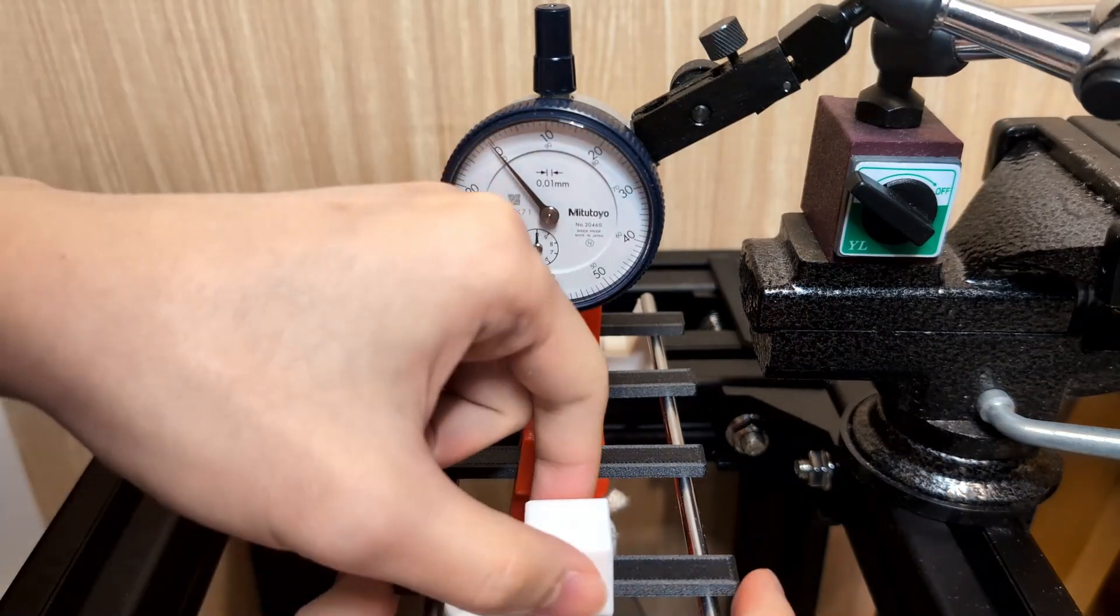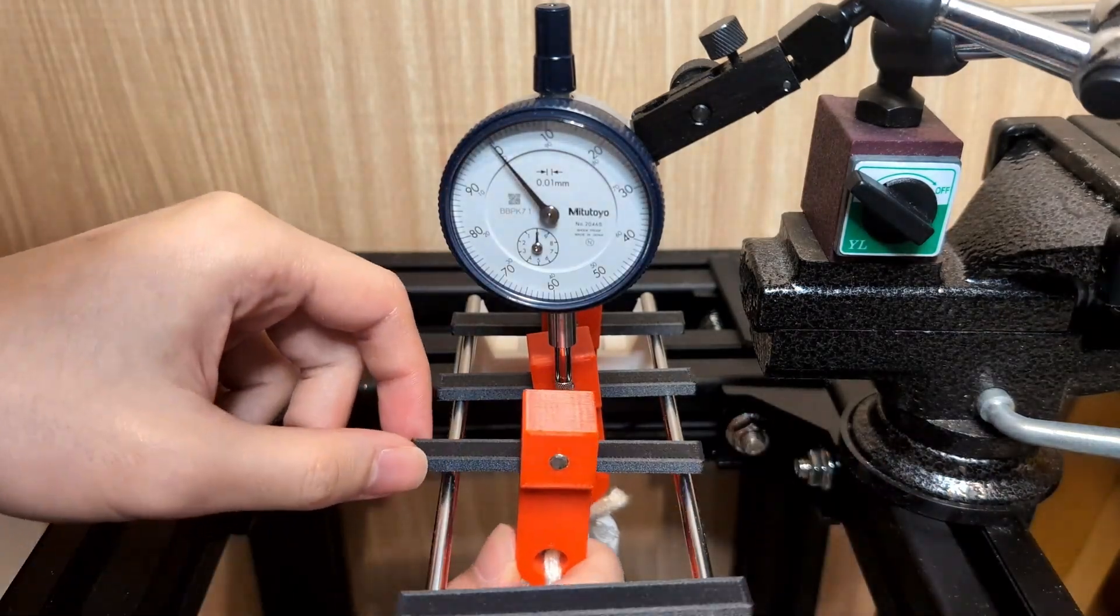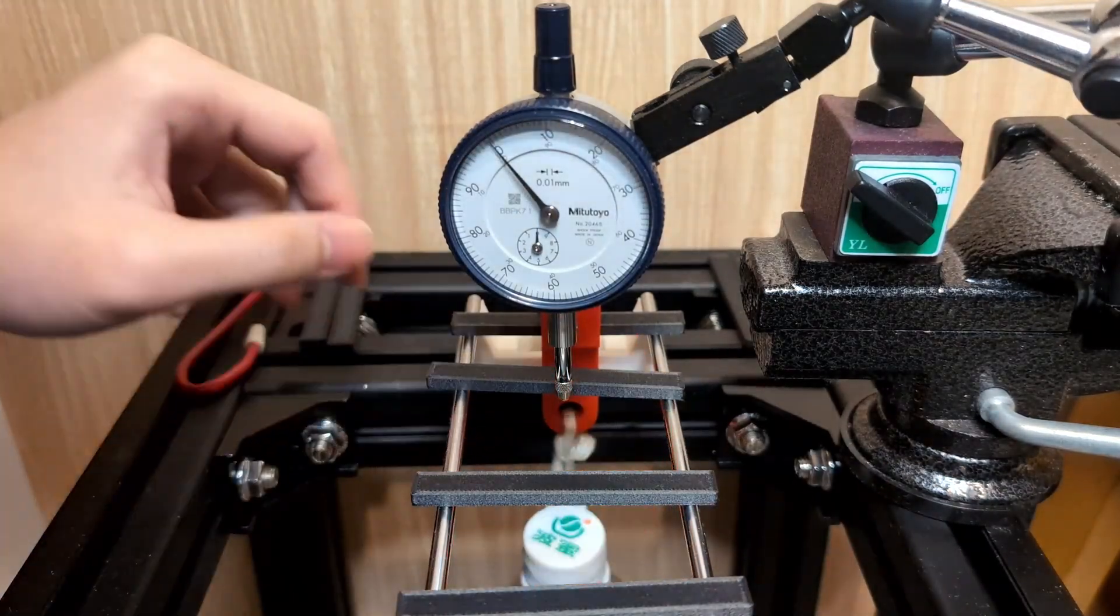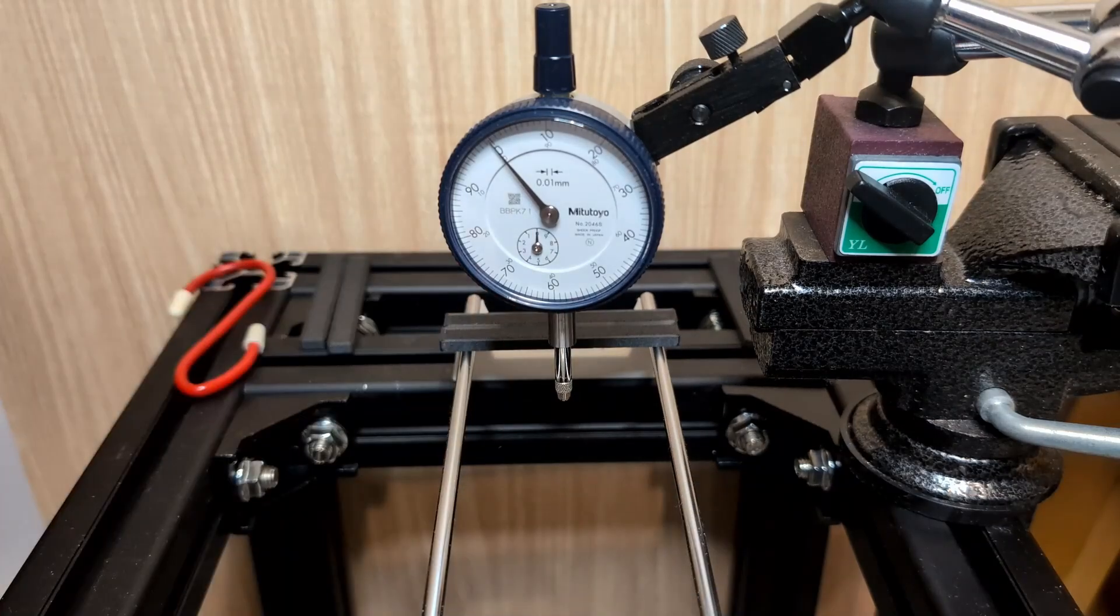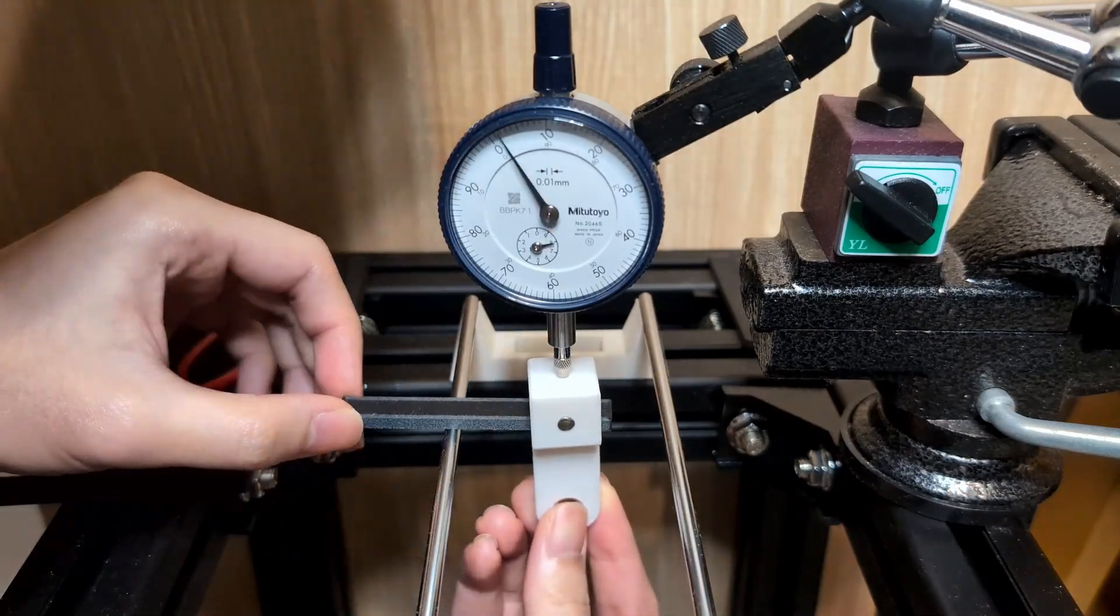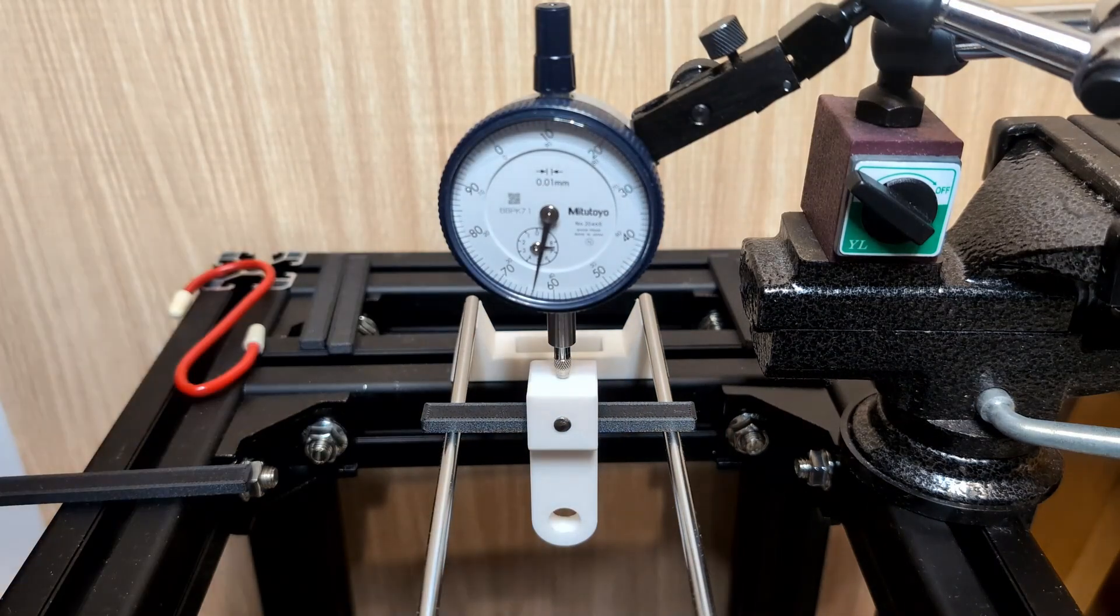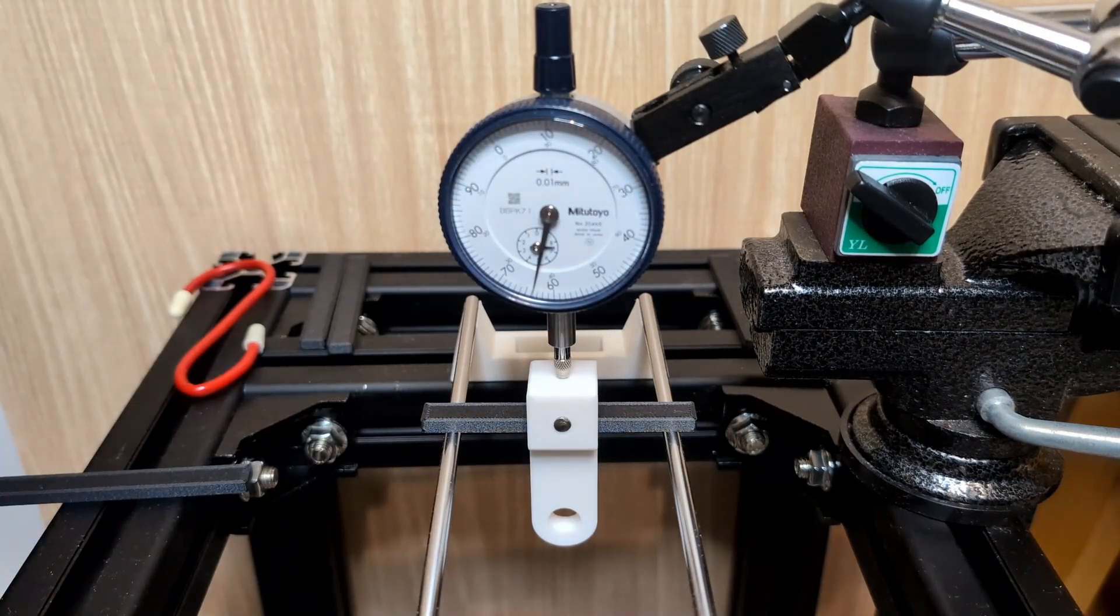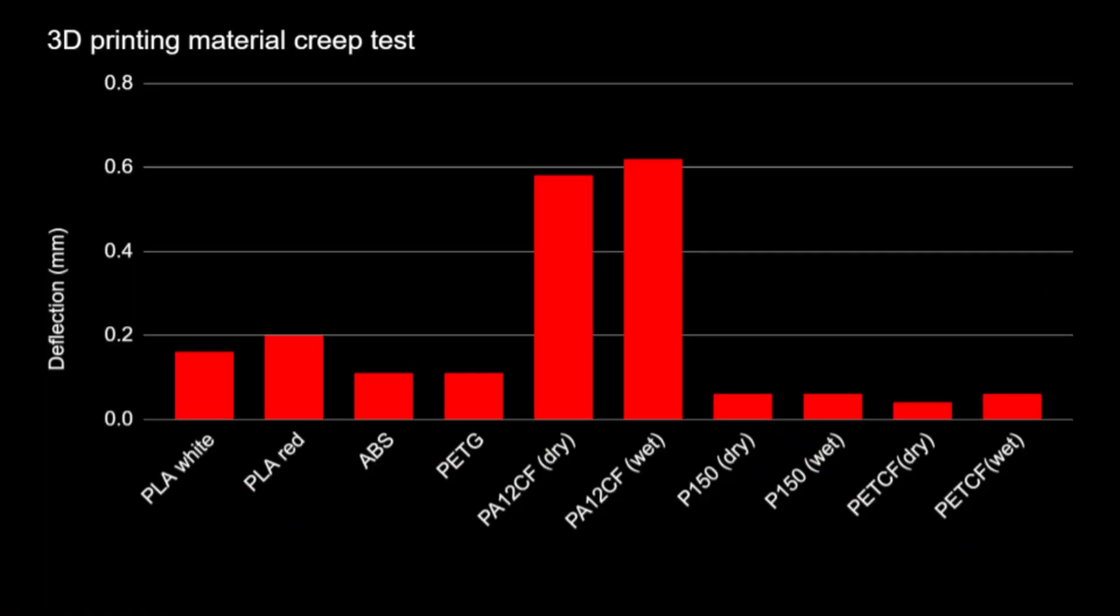The second experiment I conducted was the creep test, which evaluates how a material deforms under a sustained load over a specific period. I used the same equipment and specimens with identical shape for this test. I suspended a 500g weight on the specimens for 72 hours to measure the deflections. The results were surprisingly positive.